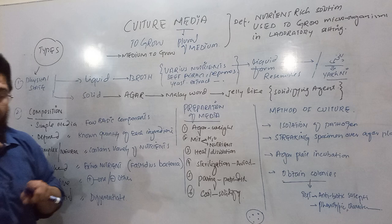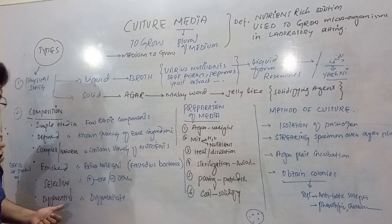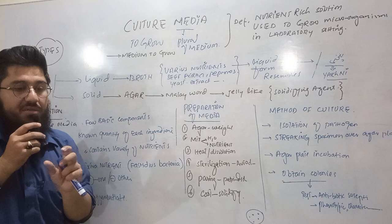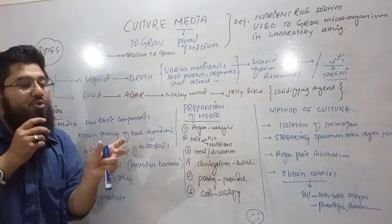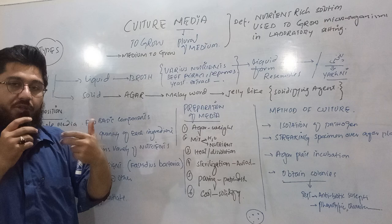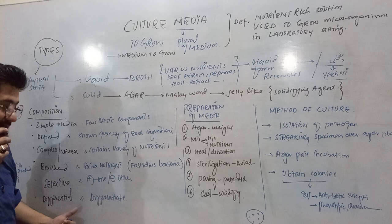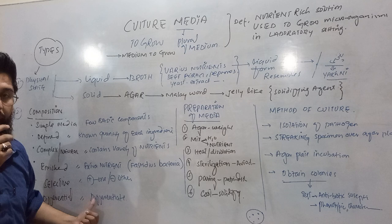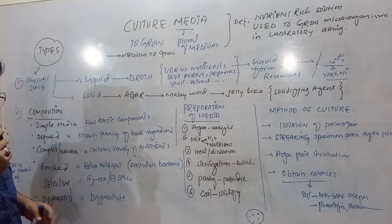Differential media provides differentiation. It helps you differentiate microorganisms in a particular medium. What happens is that microorganisms consume particular nutrients and their color changes. A bacterium that consumes a specific food in the medium will display a certain color, differentiating it from other bacteria. That is why we call this differential media — it helps us differentiate among the bacteria available in a particular medium.